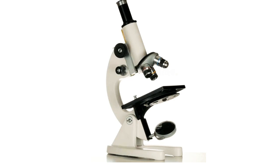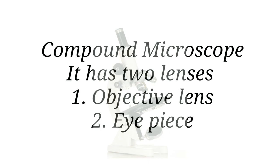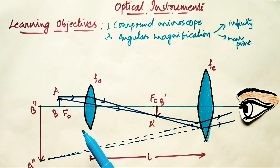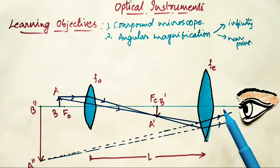As the name implies, a compound microscope is a combination of two lenses. We can see the schematic diagram as shown in the figure. It consists of one lens which is the objective lens, which has a very short focal length of less than one centimeter, and the second lens is called the eyepiece, which has a focal length of a few centimeters. The two lenses are separated by a distance L that is much greater than the focal lengths of both lenses, f_o and f_e.